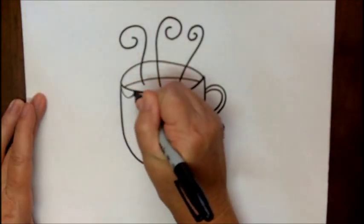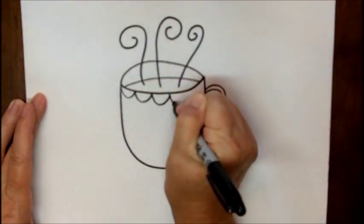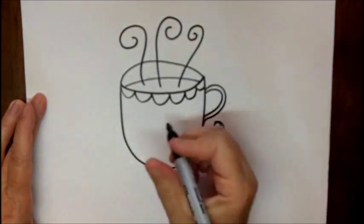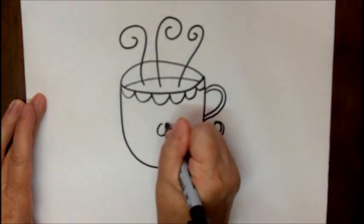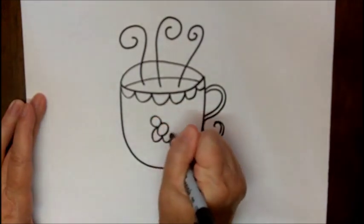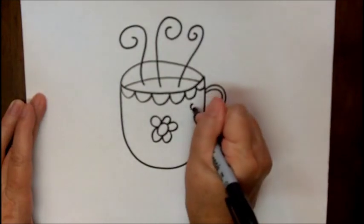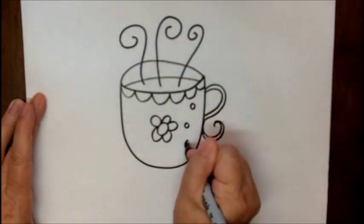I like to usually put some scalloped edges along the edge of my coffee cup. Maybe a daisy in the middle. I think that looks nice. And of course I always like dots. Little circles.